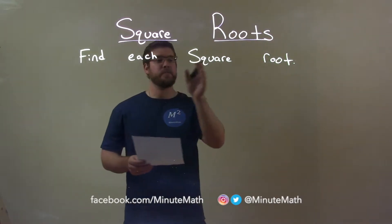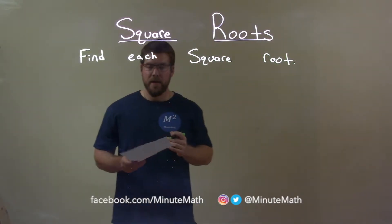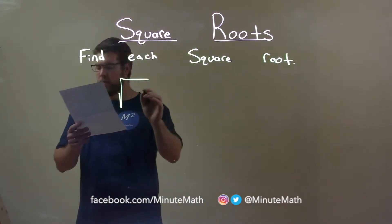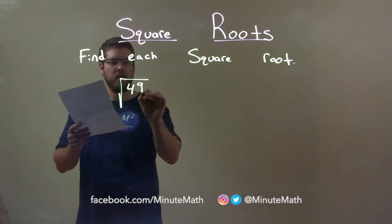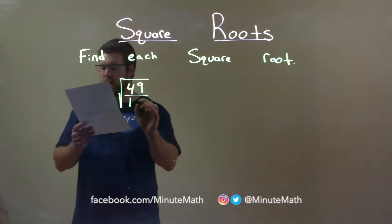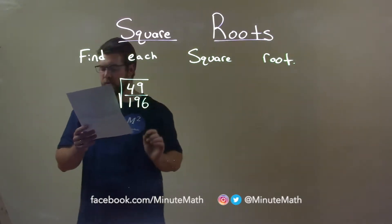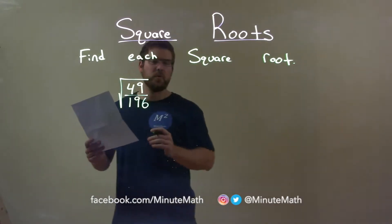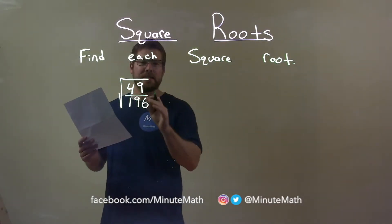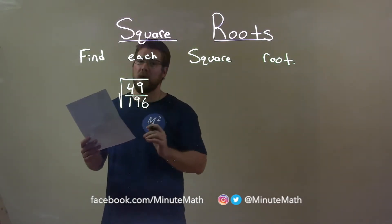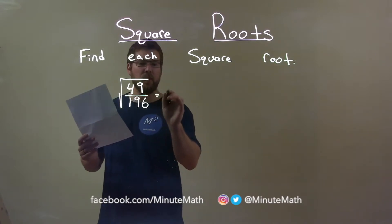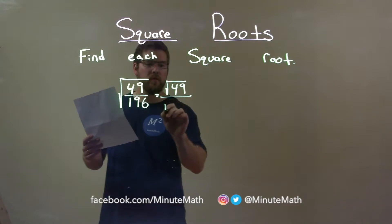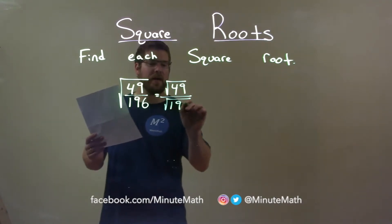We're going to find each square root. If I was given this problem — the square root of the fraction 49 over 196 — when we take the square root of a fraction, we can take the square root of the numerator and denominator individually. So we have the square root of 49 over the square root of 196.